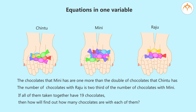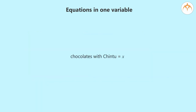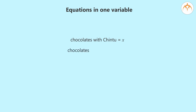Mini's chocolates are based on Chintu's chocolates, and Raju's chocolates are based on Mini's. So if we know Chintu's chocolates, we can find the others. We will show Chintu's chocolates by the variable X. The chocolates that Mini has are one more than double Chintu's chocolates, so she has 2X plus 1 chocolates.